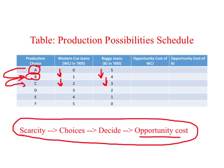Another major constraint we face is money. Suppose you have five thousand dollars in your bank account. You could use it to make a trip overseas or to buy a used car. If you decide to buy a used car, what you give up is the benefit of traveling overseas. If you decide to travel overseas, what you give up is the benefit of driving a used car. That forgone benefit is your opportunity cost.